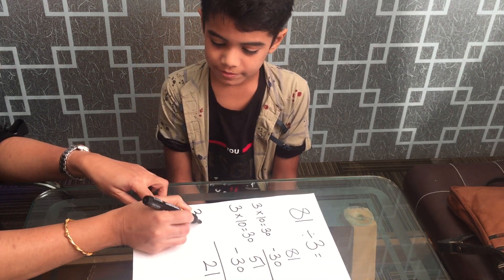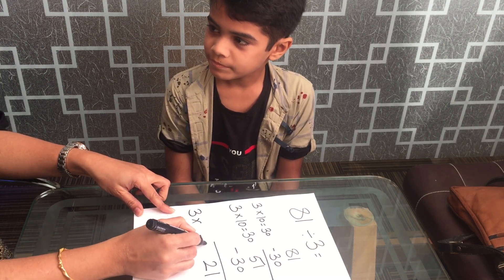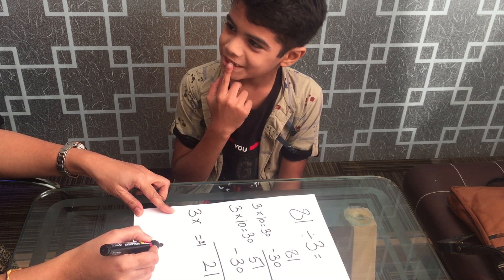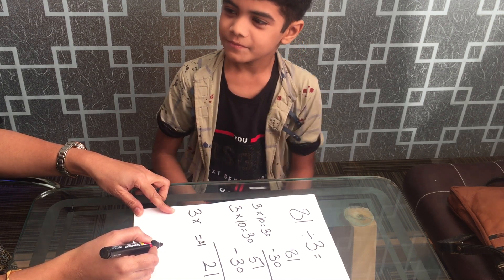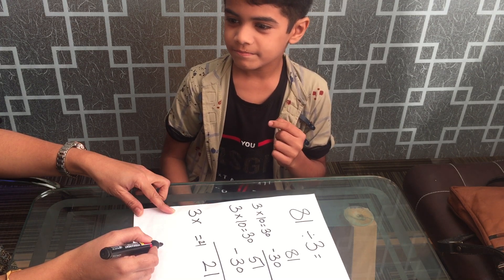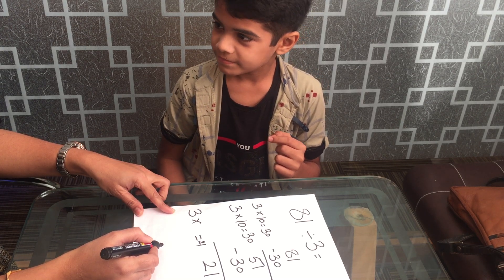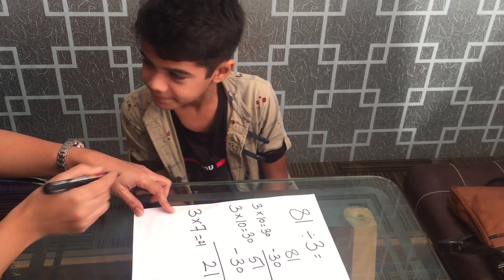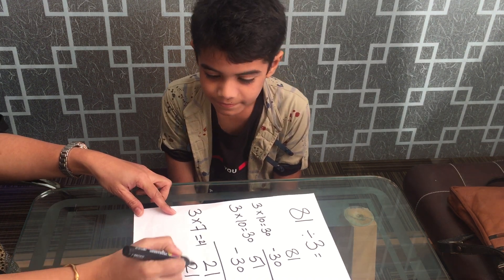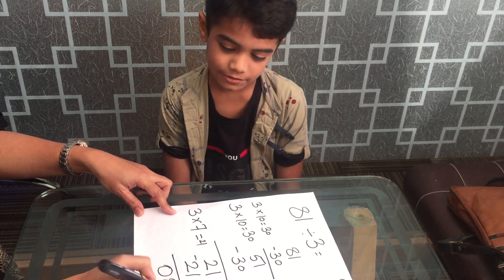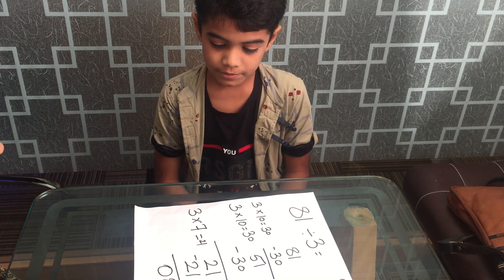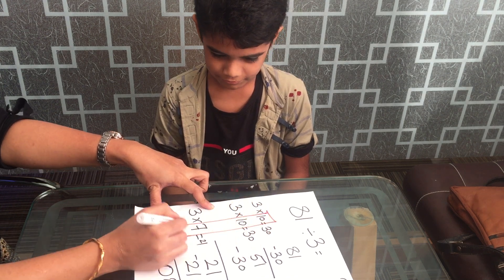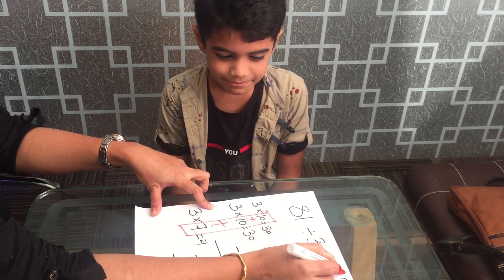Now tell me — does 21 come in the 3 times table? 3 sevens are 21, right? So now we got the answer. 21 minus 21 equals 0. So what will be the final answer now? 27. Right. 10 plus 10 plus 7. So we got the answer: 27.